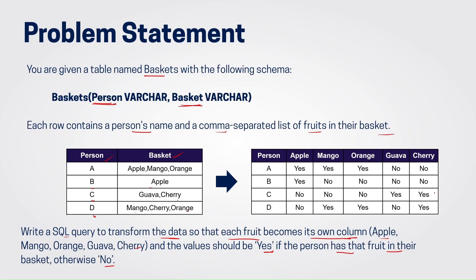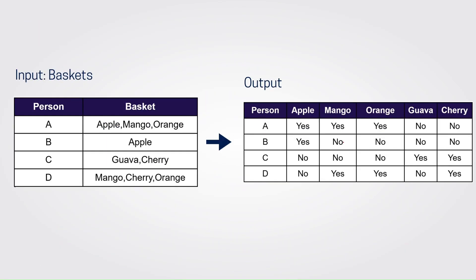So this is how your output should look like. You have the respective person column, then new independent columns for each fruit — apple, mango, orange, guava, and cherry. Person A has apple, mango, and orange in his basket, so you can see yes for apple, yes for mango, and yes for orange. Since there is no guava and no cherry in his basket, no has been assigned for those remaining fruits.